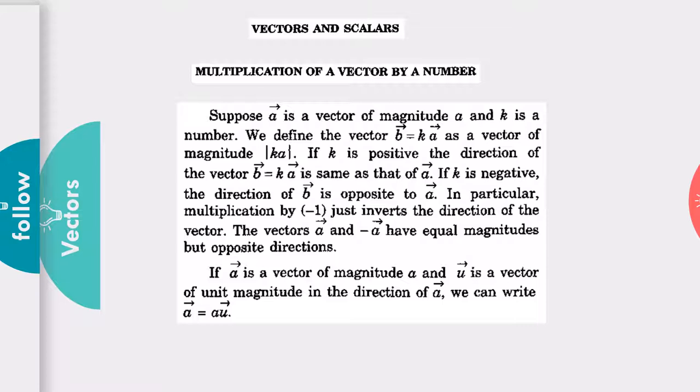This thing you should keep in your mind. Also if you want you can read the part that I have written. Suppose vector a is a vector of magnitude a and k is a number, we define the vector v which is k times vector a as a vector of magnitude... it is quite simplified. If you are unable to understand then please you can comment in my inbox. Now I am moving further.